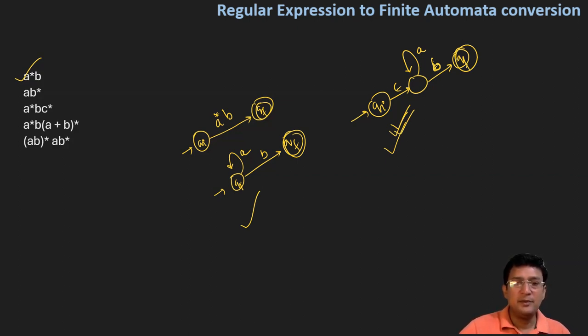Next example is b*. This will be completely similar. b* means initial state and final state with b self-loop. Initial state, nested state with b self-loop, and final state. This is very simple to design.